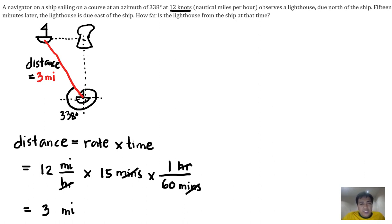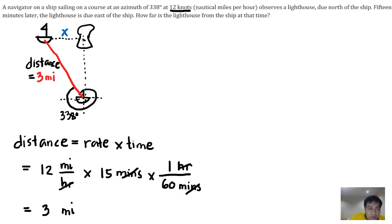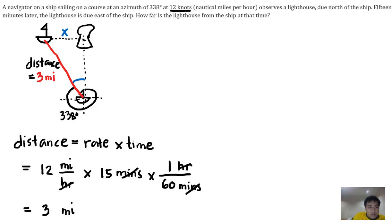What is being asked is how far the lighthouse is from the ship — this unknown distance we call x. We know the angle is from 338 degrees. Since the whole revolution is 360 degrees, this angle is the difference: 360 minus 338 equals 22 degrees.